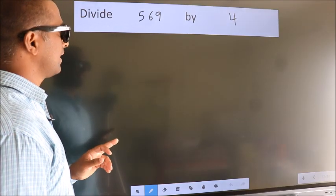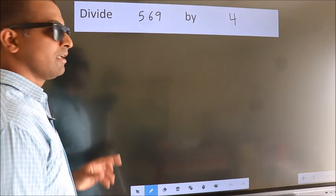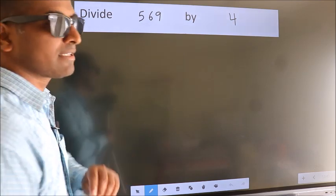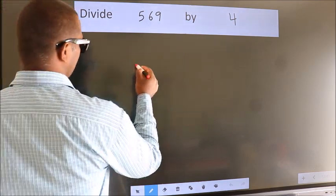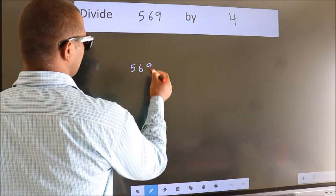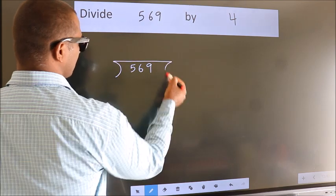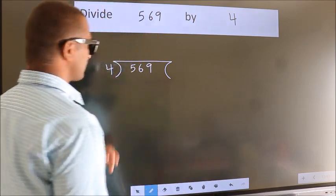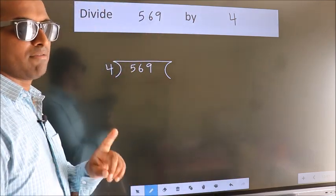Divide 569 by 4. To do this division, we should frame it in this way. 569 here, 4 here. This is your step 1.